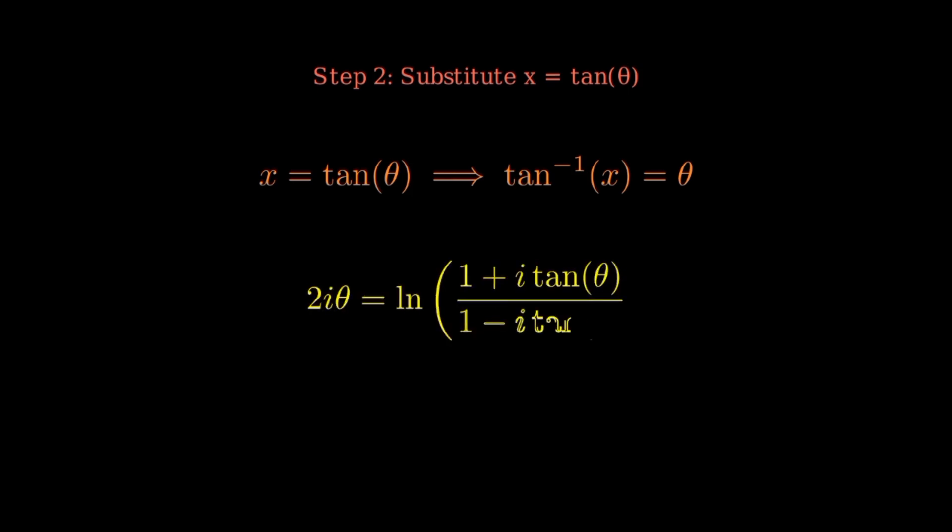Step 2. Substitute x equals tangent theta. If x equals tangent theta, then arctangent of x simply equals theta. So plugging this in, we get 2i theta equals the natural log of the fraction, 1 plus i tangent theta over 1 minus i tangent theta. Now we're working with an angle theta instead of x, which sets up the trig simplification.